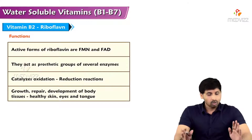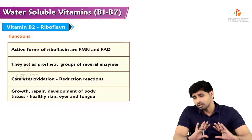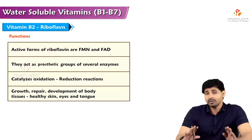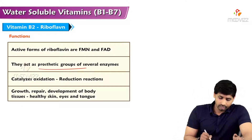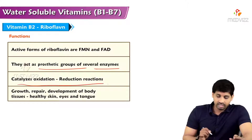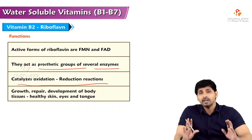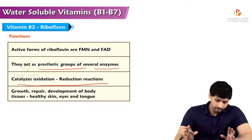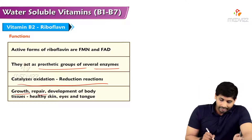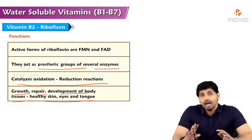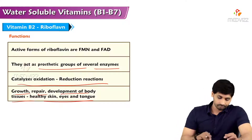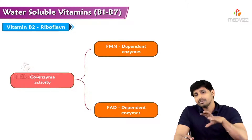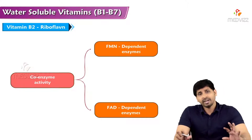Regarding functions: the active forms are FMN and FAD, and there are many reactions dependent on them. FMN and FAD are involved in dehydrogenation reactions and act as prosthetic groups of several enzymes, catalyzing oxidation-reduction reactions. They are also involved in growth, repair, and development of body tissues, and contribute to healthy skin, eyes, and tongue. Both FMN and FAD have coenzyme activity.